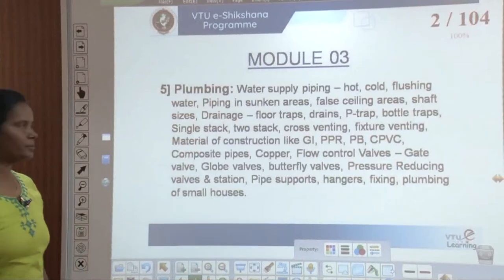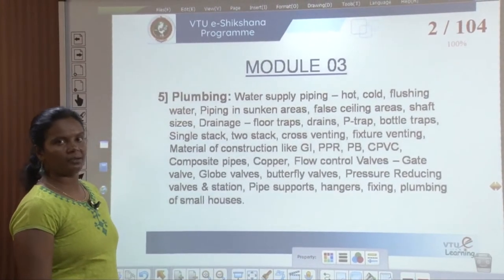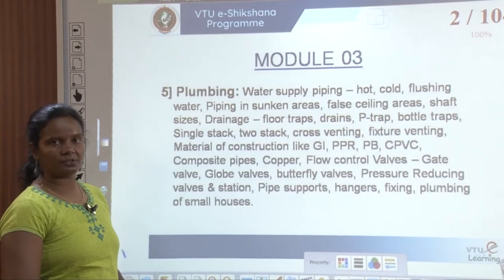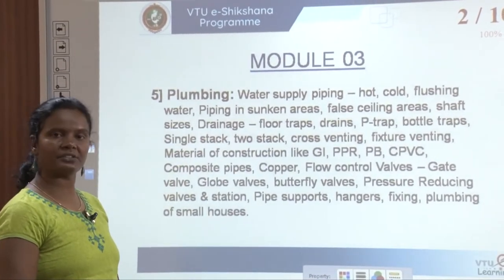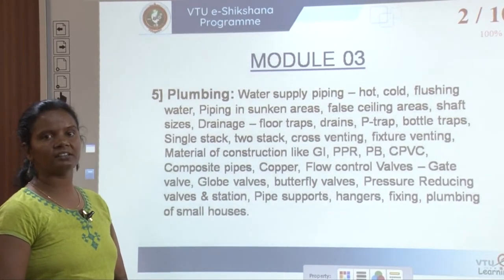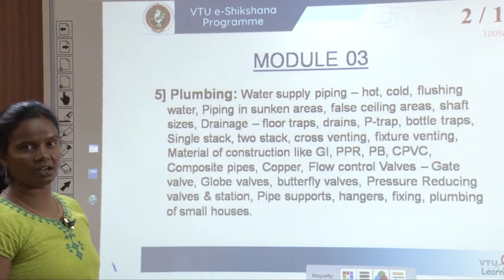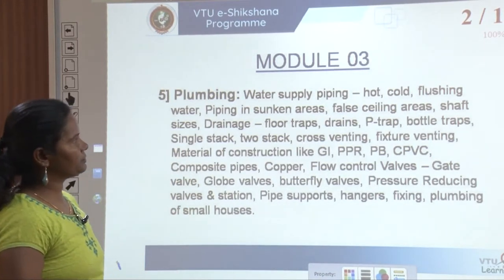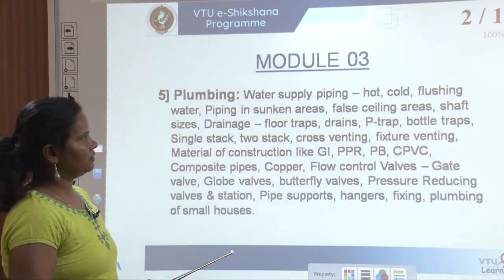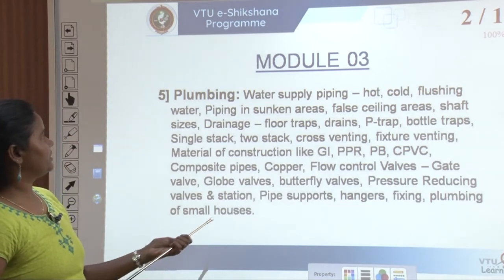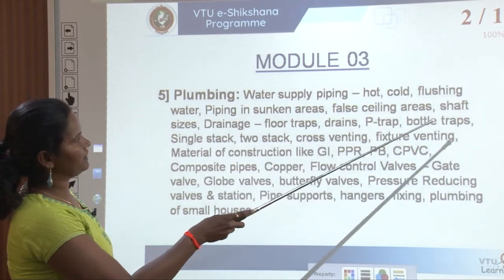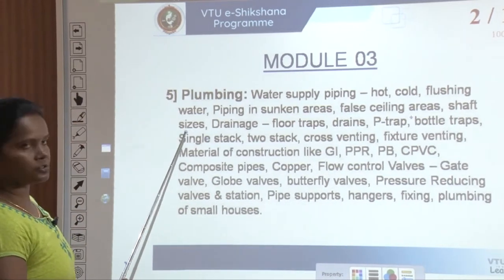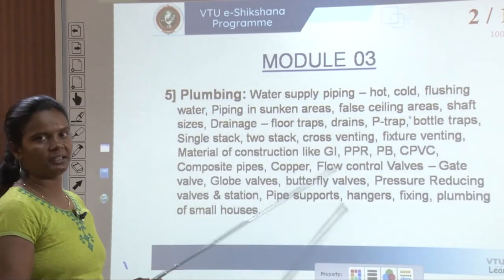In module 3, we will be covering Plumbing. In modules 1 and 2, there was a vast coverage of water supply and sanitation at the city level and how it has been transferred from one place to another. Here in Plumbing, we are dealing in detail with particularly one house or one building — how the plumbing can be done. We will be studying water supply and piping, hot water, cold water and flushing water, piping in sunken areas, foil sealing areas, shafts, how the pipes go under foil sealing areas, shaft sizes, and how the drainage from the building is connected.